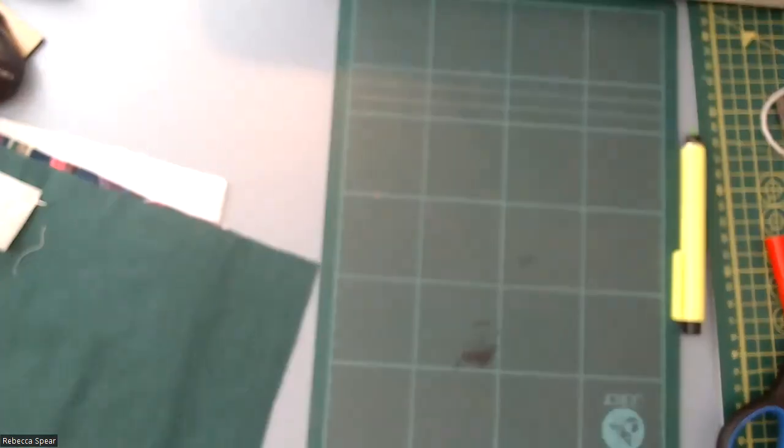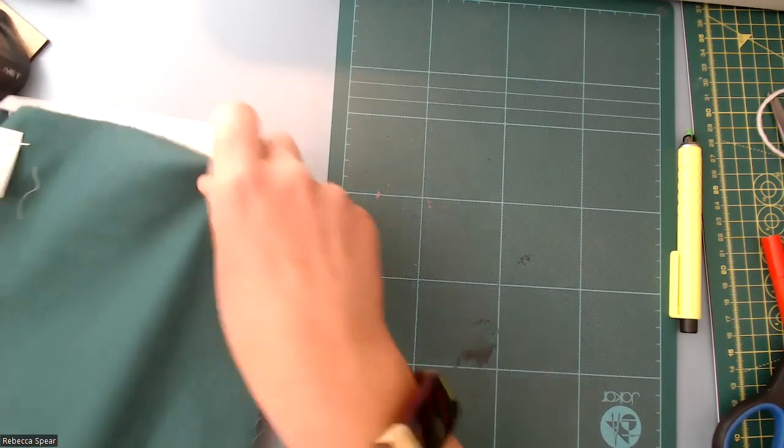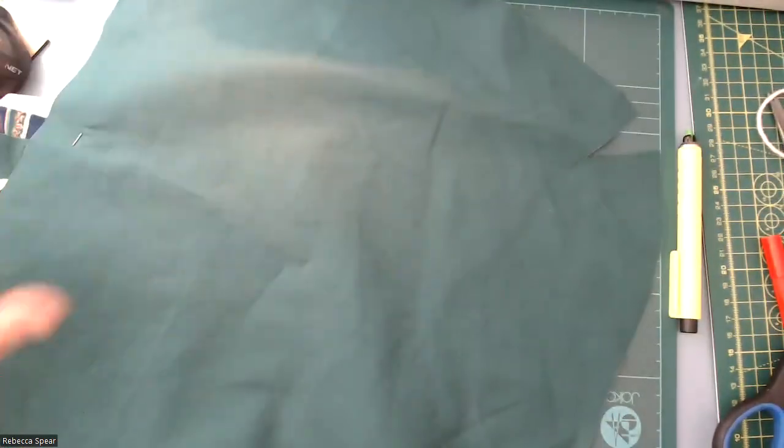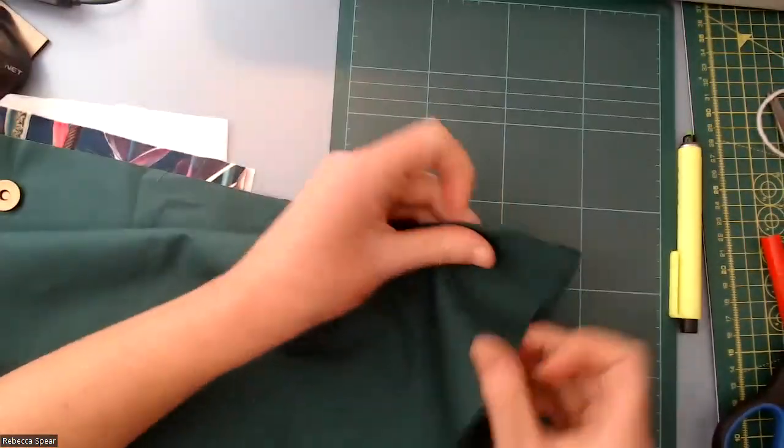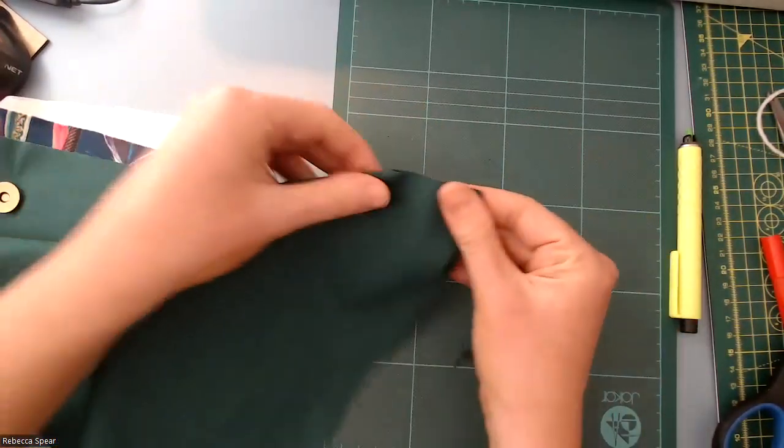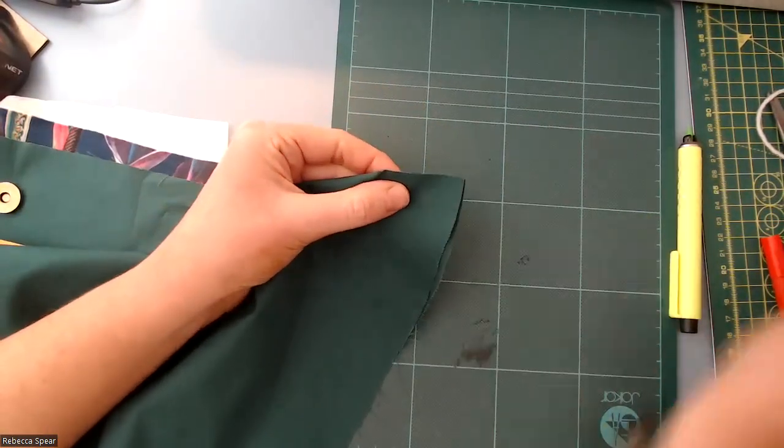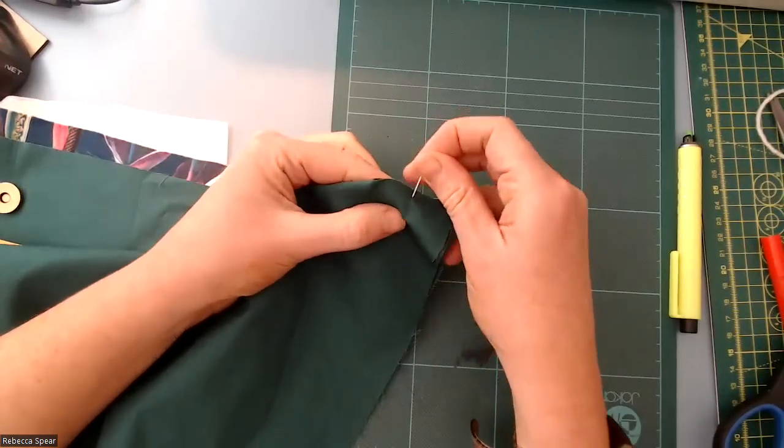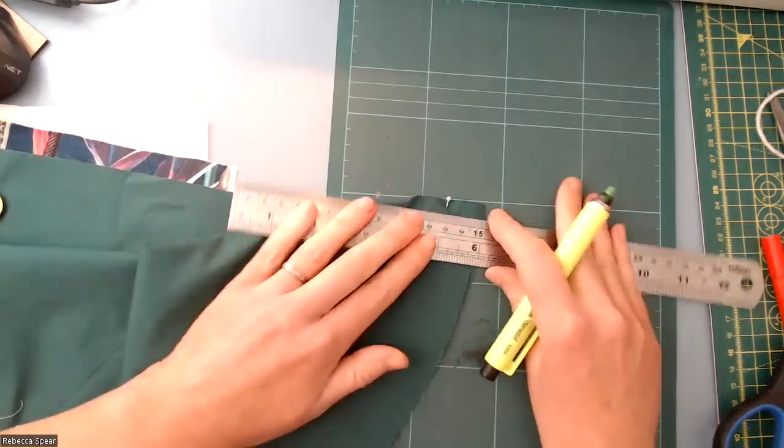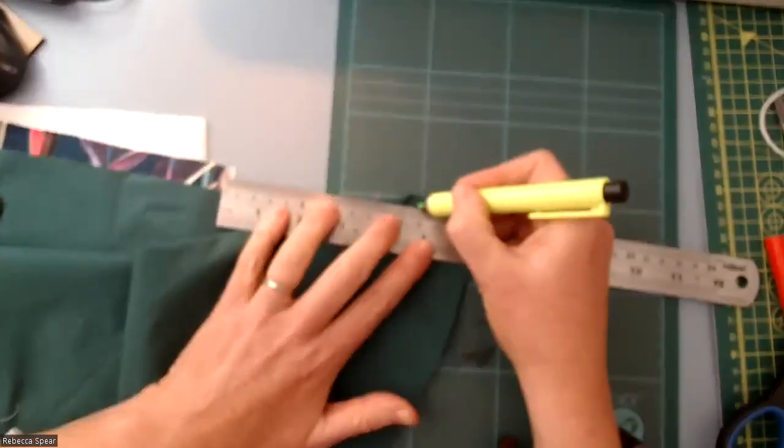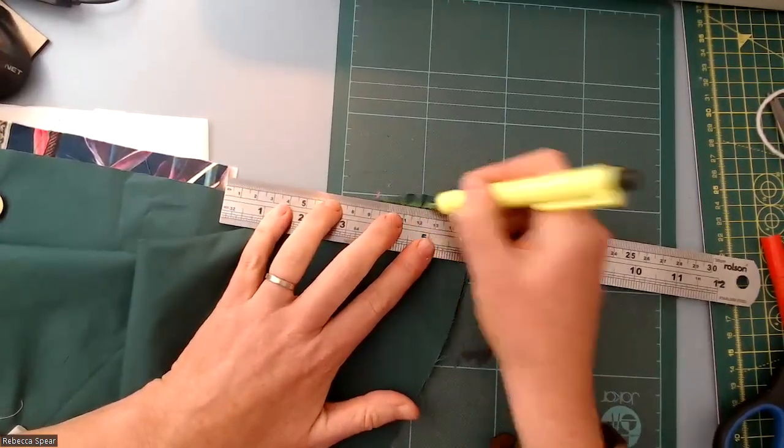So of all the two lining pieces and the two outer pieces, if you fold right sides together like this, you can pop a pin in. We're just going to sew with half a centimeter seam allowance, and I'll show you with tailor's chalk off to the point there as well.